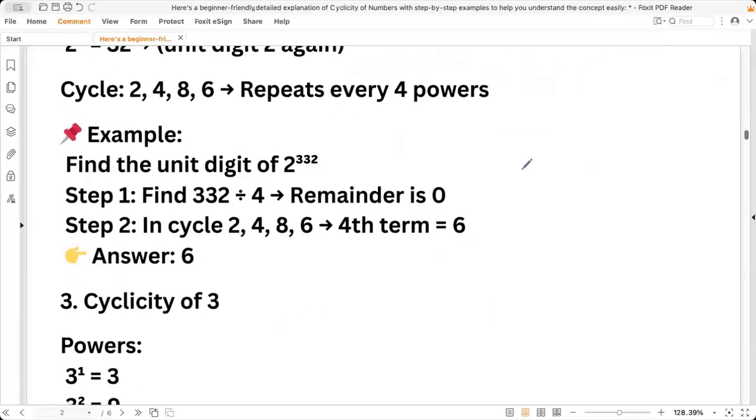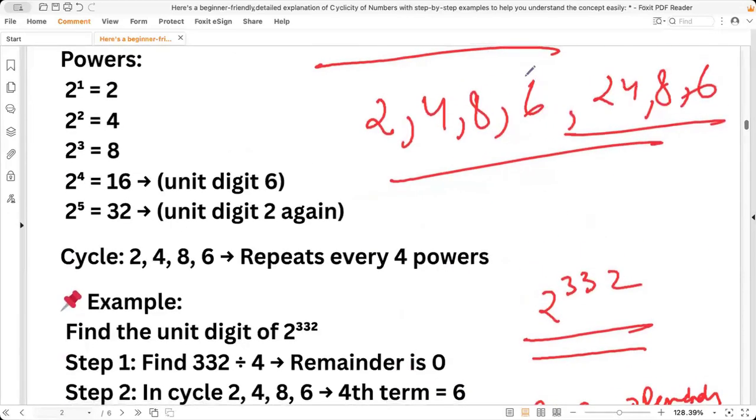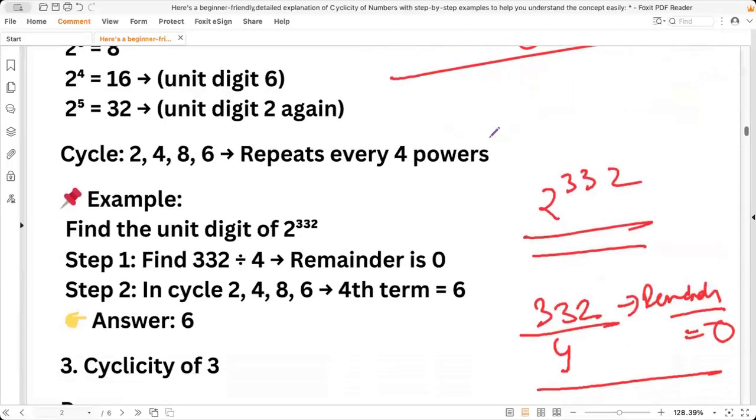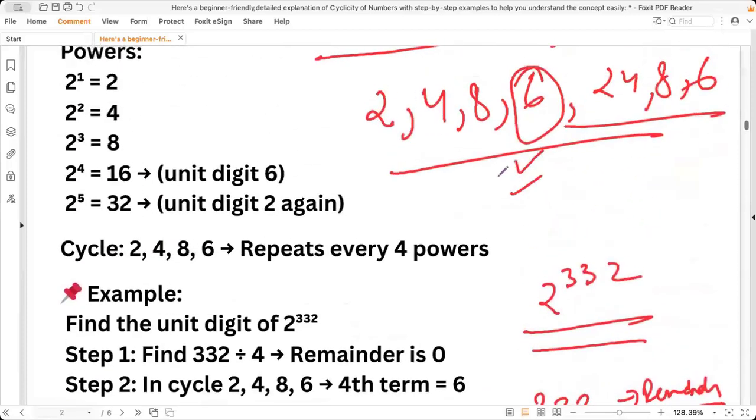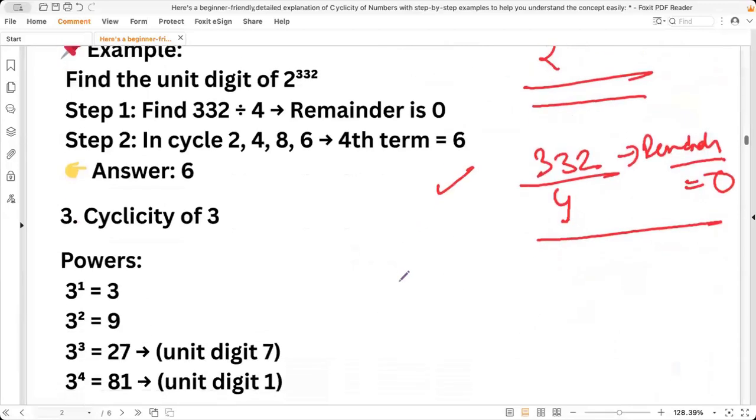So for example, if you have to find 2^332, what will be the unit digit? What you will do is, as it goes in the block of 4, divide 332 by four. The remainder is zero. That means in cyclic term, the last one was 6, that will be the answer. The fourth term, as it is getting fully divided by four, will be the unit digit.